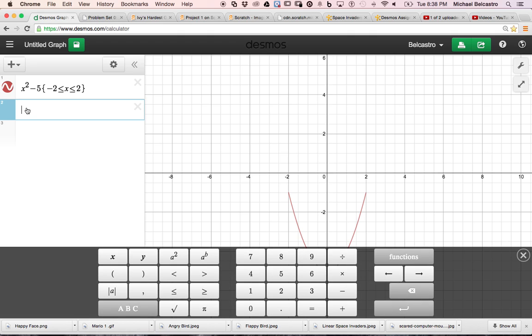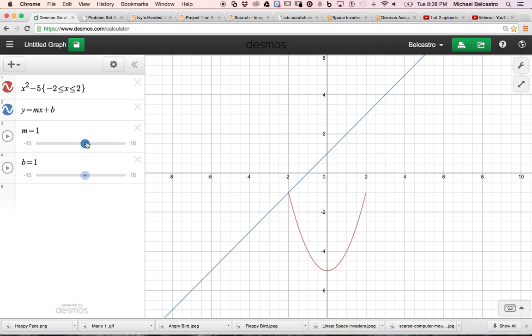And then maybe we want some angled lines. So maybe we use our y equals mx plus b. And we can make some sliders for this. Maybe I want it to have a negative slope. So that's like the left eye.